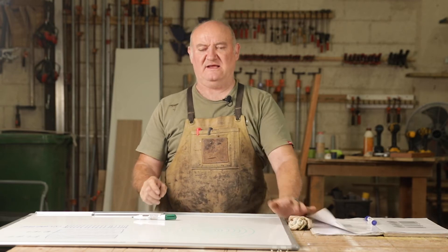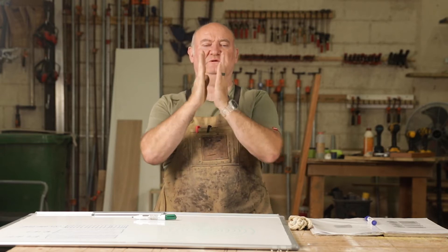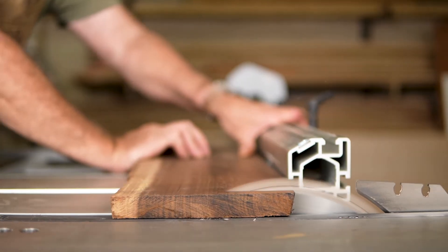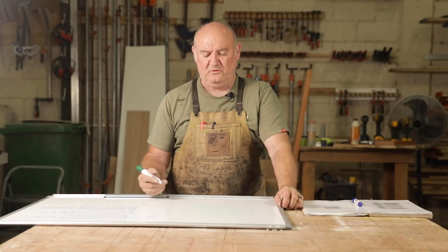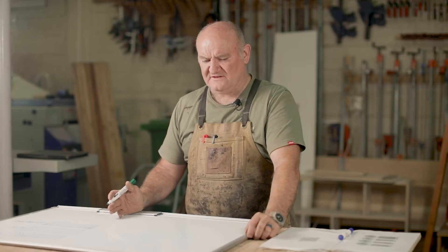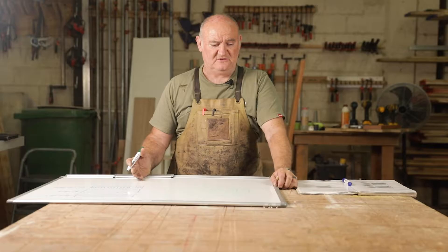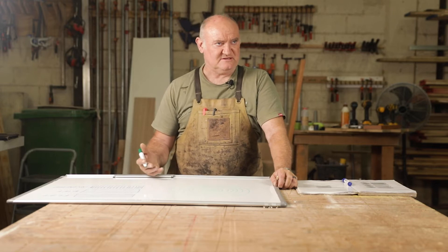If you think about a tree like a series of straws facing upwards, there's always wood movement because your straws are absorbing moisture and letting moisture go. One of the things to consider when you're making furniture, you've got to account for wood movement. Wood is never dead. People think that once you've chopped the tree down it stops doing what trees do, but it actually never stops letting moisture out and bringing moisture back in.